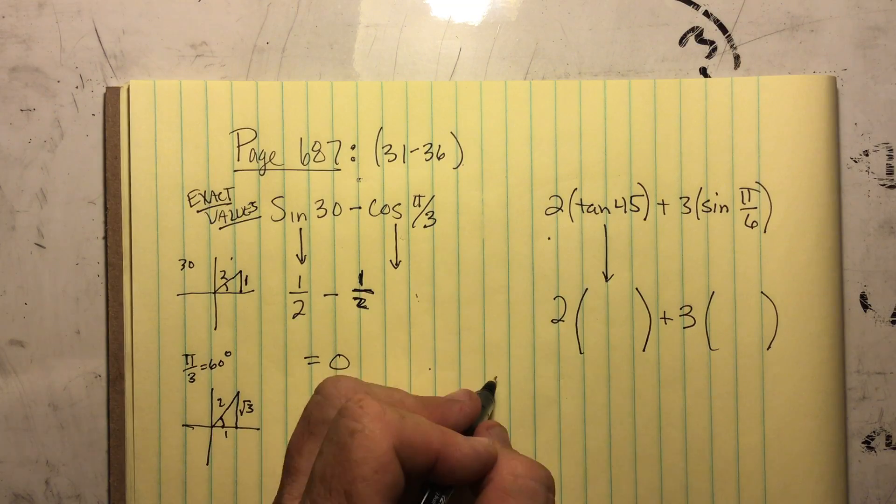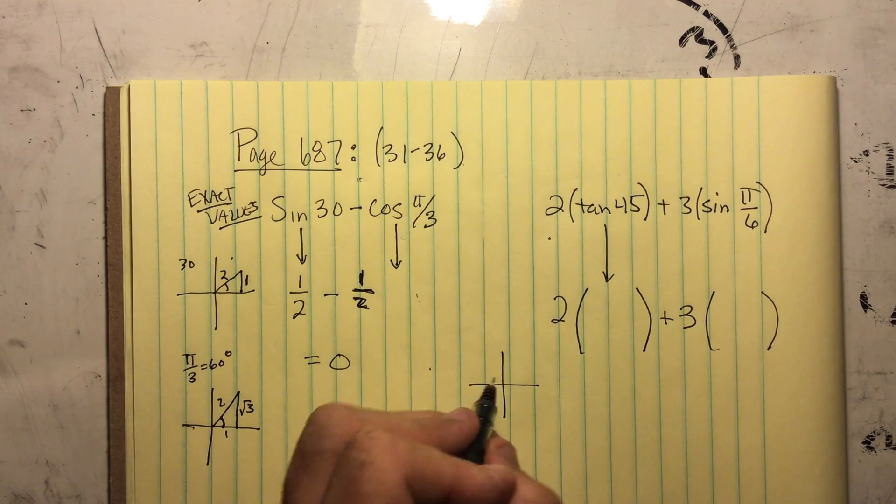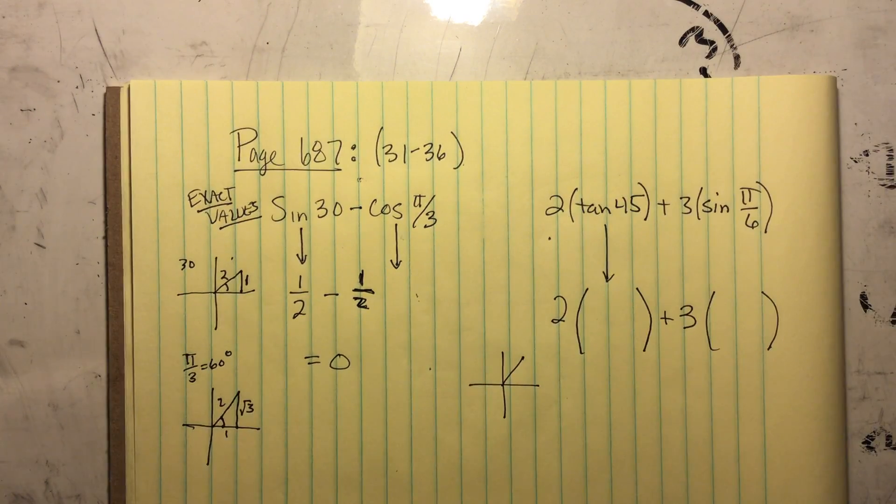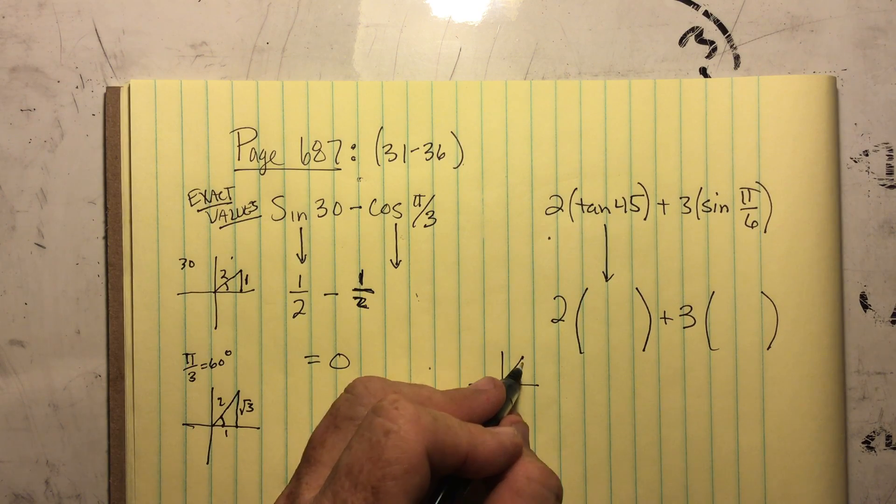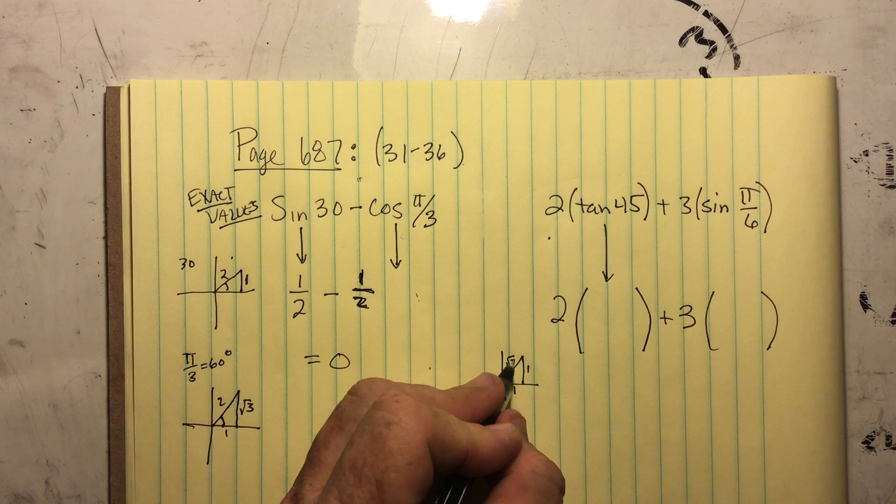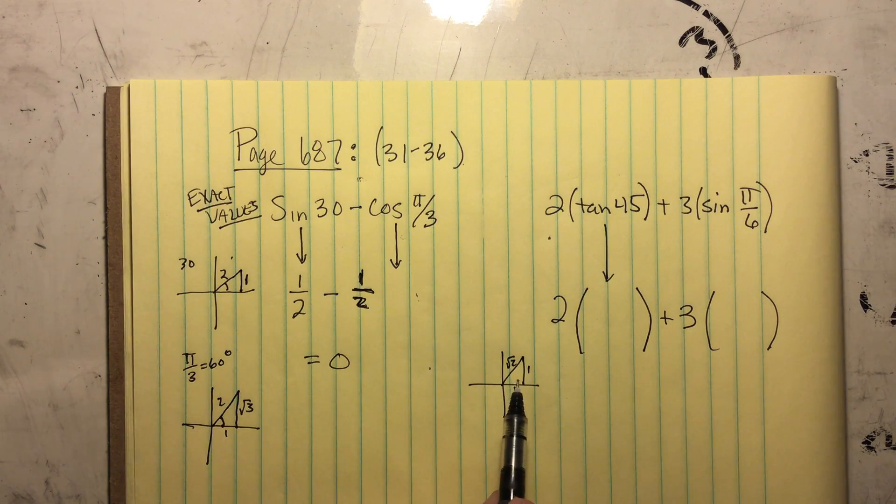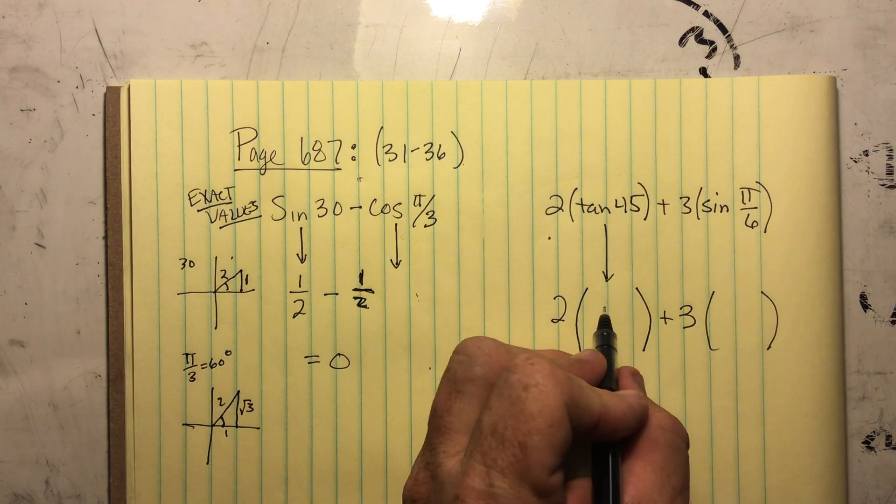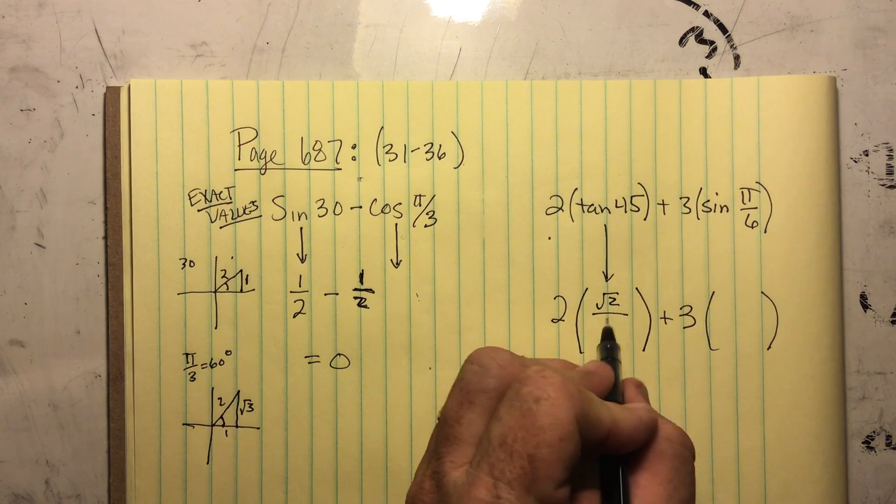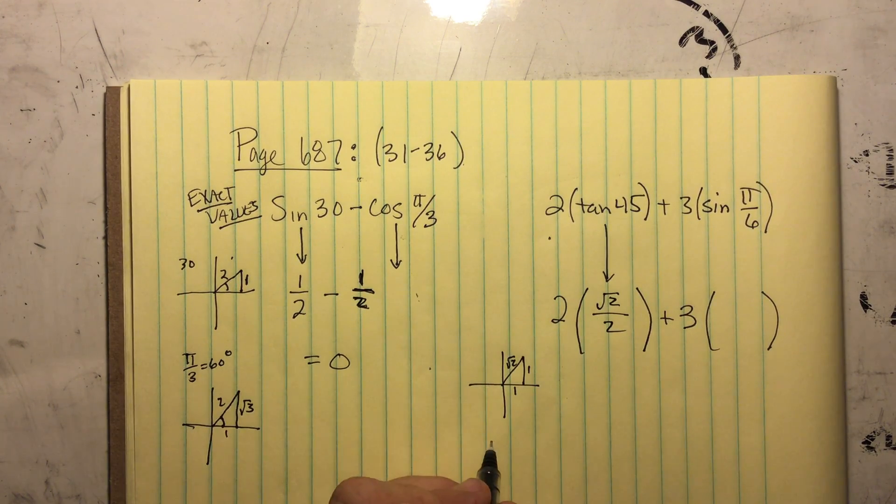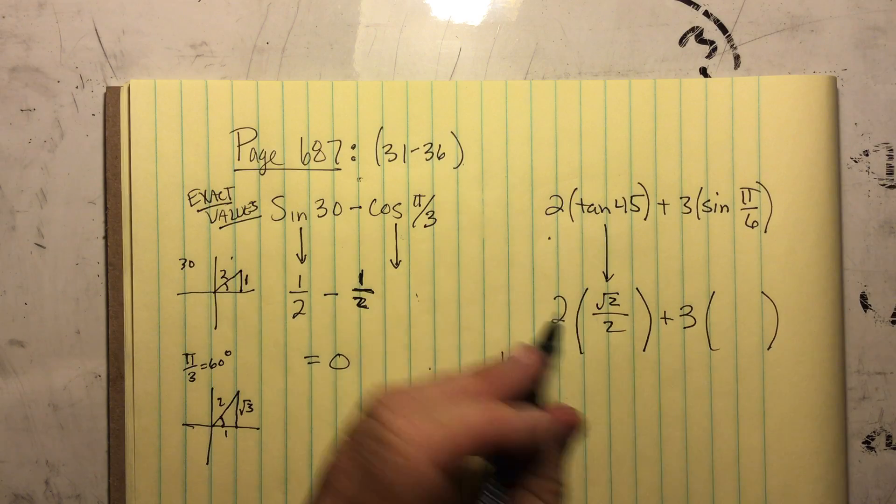So the tangent of 45, 45 is in the first quadrant. Well, if it's 45, that means it is a 1, a 1, and a root 2. So the tangent of 45 is going to be root 2 over 2 because...